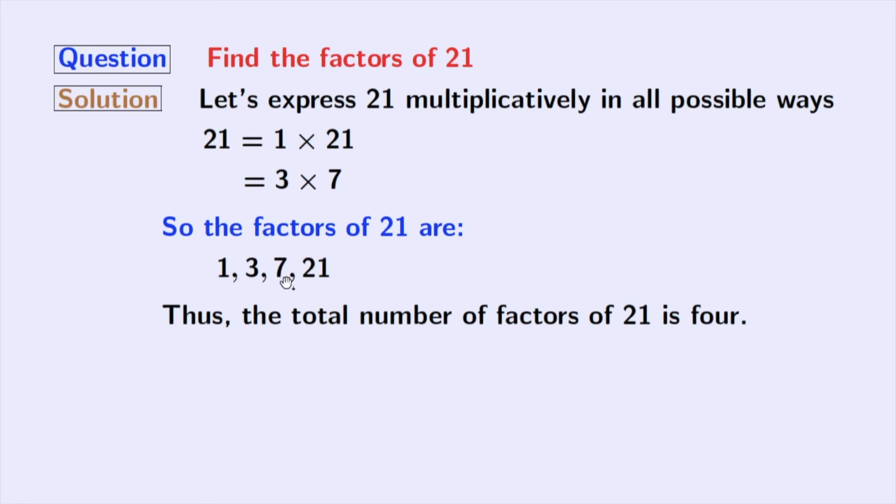Now, if we look at these factors, we can see that 3 and 7 among these factors are prime numbers because these two numbers do not have any divisor other than 1 and that number itself.